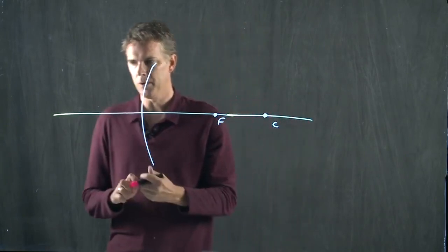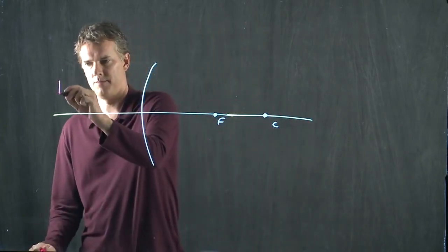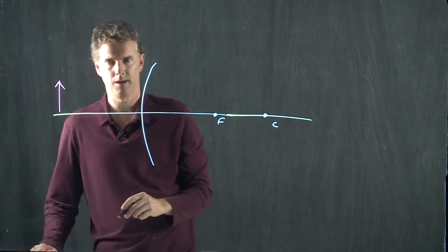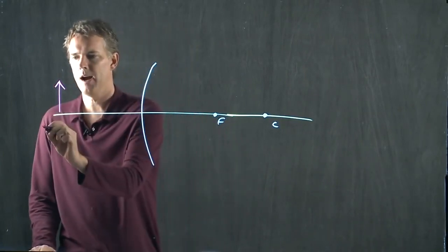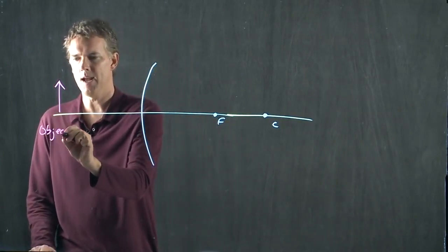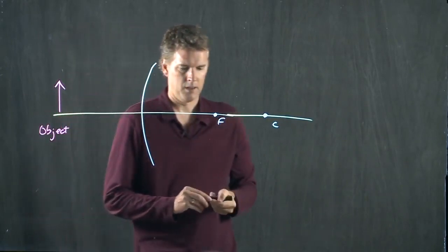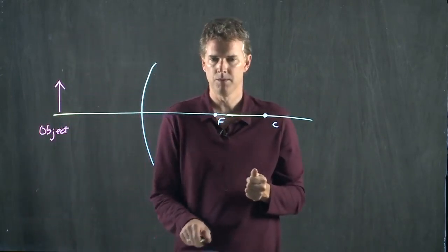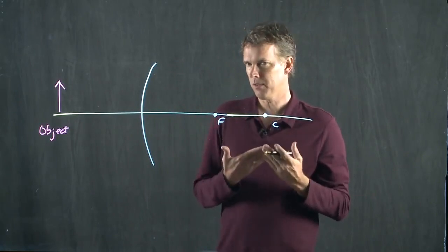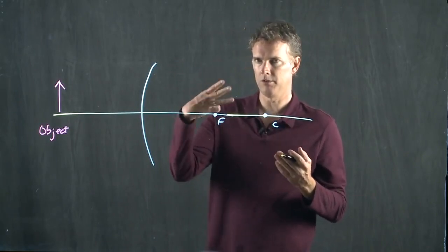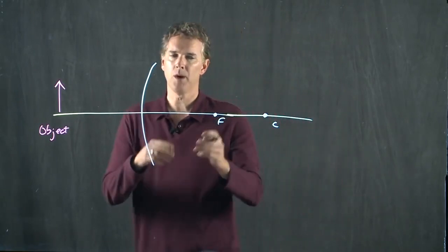If I put my object right there, how do I find the rays that are going to form the image? We do the same thing that we did before. We follow those three rules, except we have to remember that the focus is over here and the center is right there.